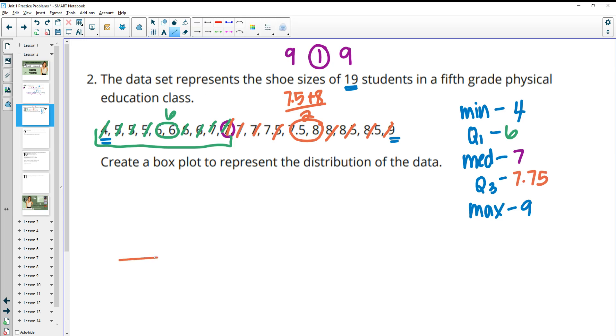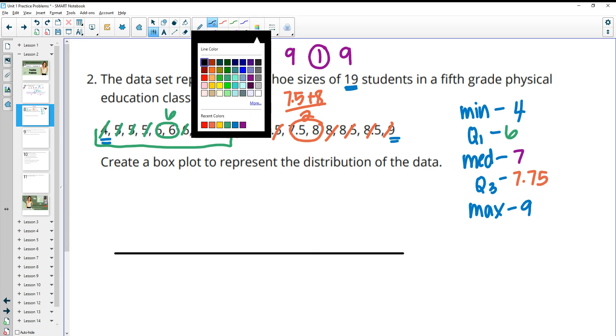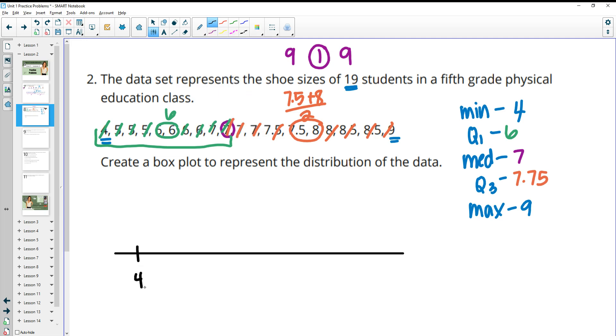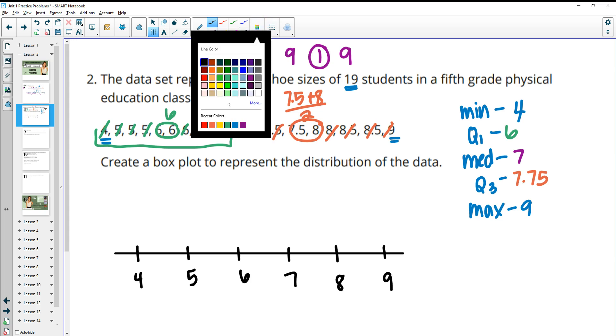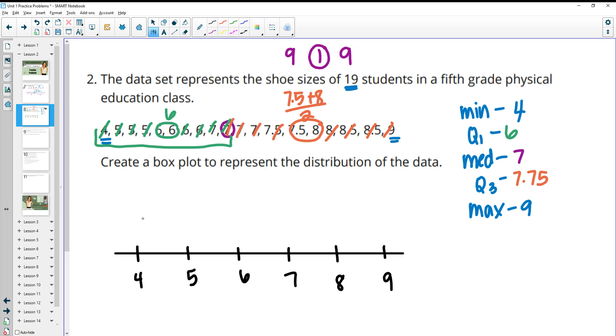So then what you want to do is create your box plot. I like to start with a number line and we just want to make sure we have numbers 4 to 9 on there and try to space these out fairly similarly. So 4, 5, 6, 7, 8, 9.